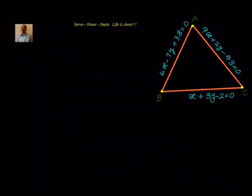You can use any of the methods to find out the vertices. You can use cross multiplication method, substitution method, or elimination method. Elimination method is what I generally use, so I will go ahead with elimination method and try to solve this to find out the vertices B, C and A respectively.